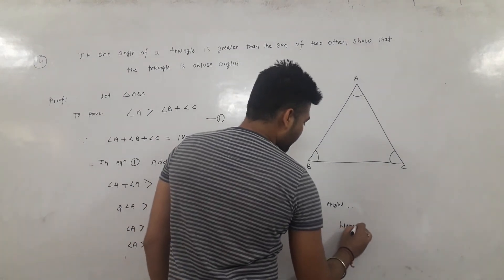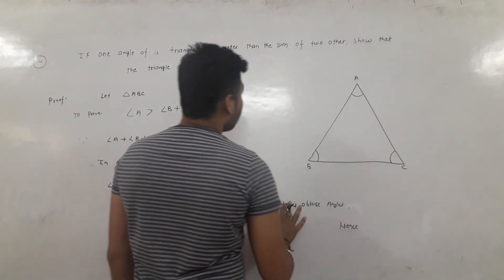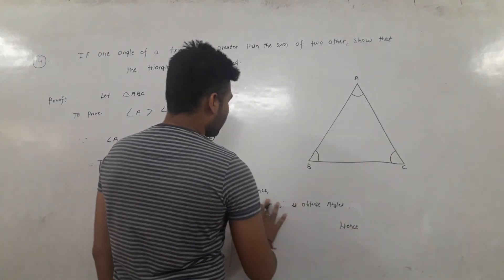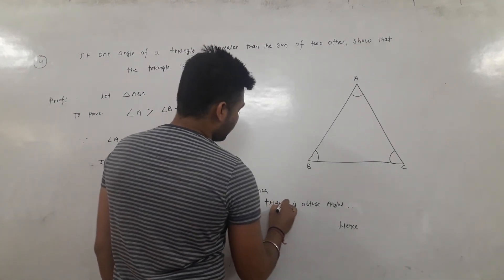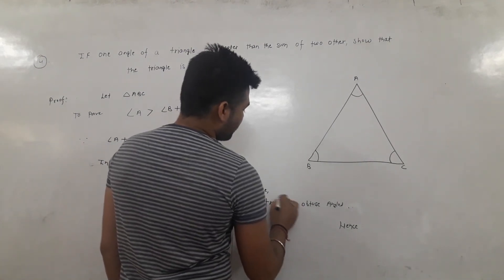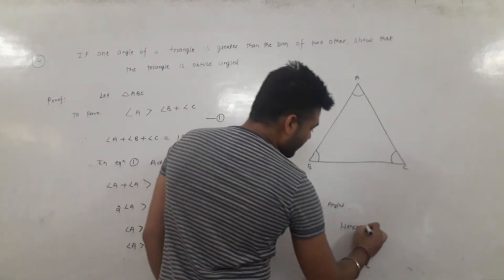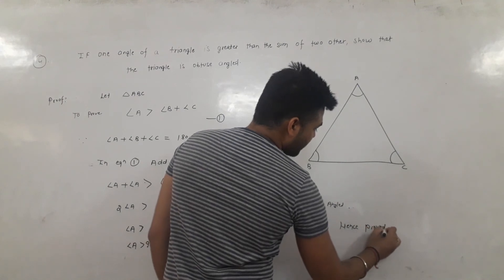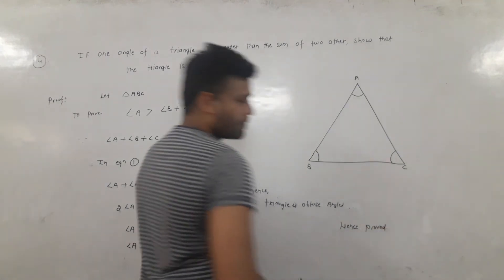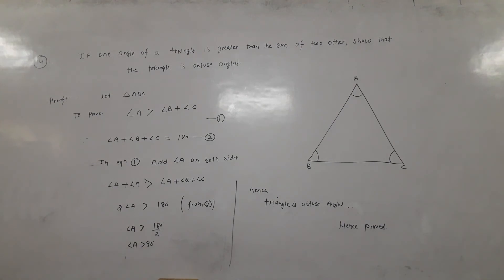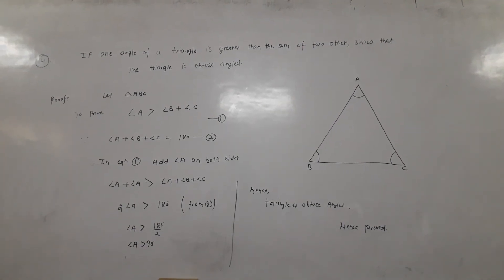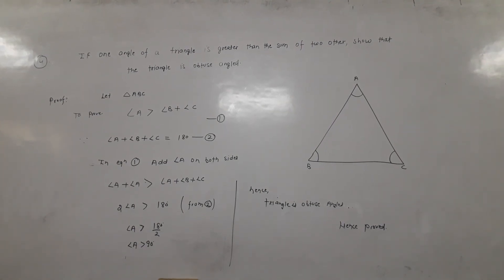So angle A is greater than 90°. Therefore the triangle is obtuse angled. Thank you.